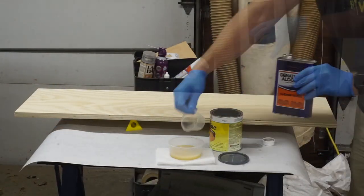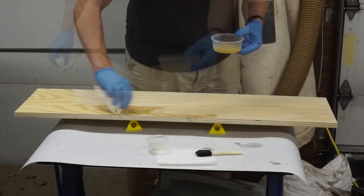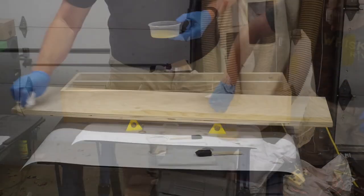As I almost always do prior to finishing plywood, I thinned out some shellac to use as a sealer and applied this to all components of the shelf.